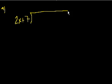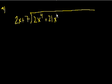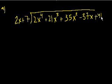All right, we're on problem number nine. At least for the next few, I don't think I have to copy and paste these problems. I can just write it. So it looks like a little bit of algebraic long division. Problem nine. They want us to divide 2x plus 7 into 2x to the fourth plus 21x to the third plus 35x squared minus 37x plus 46.